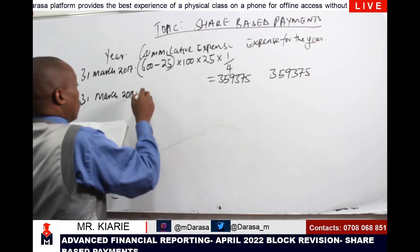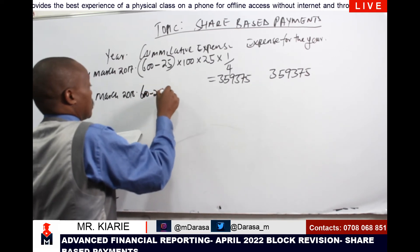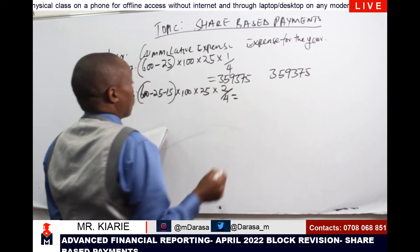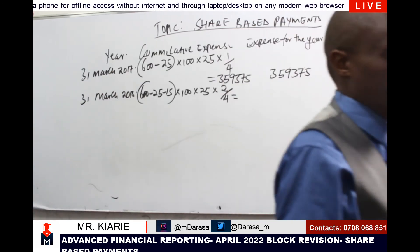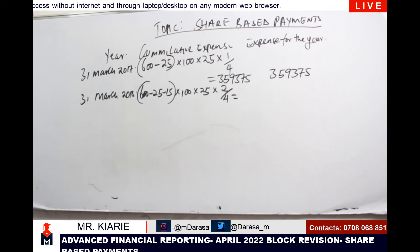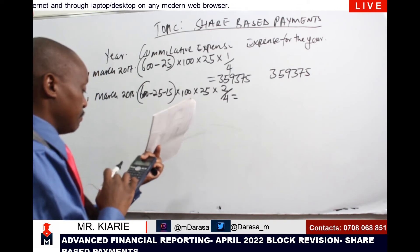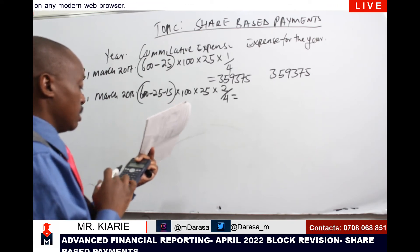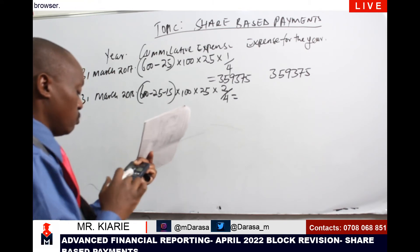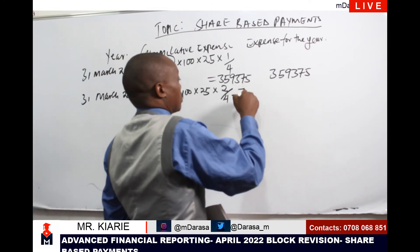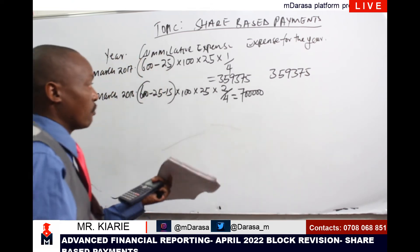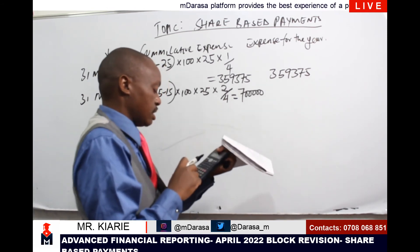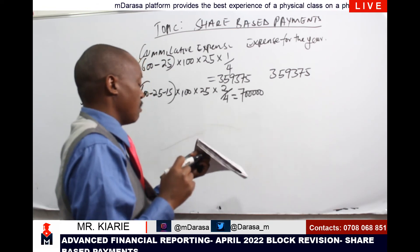For the year ending 31st March 2018, another 15 employees left, so the calculation is: 600 minus 25 minus 15, times 100, times 25, times 2 over 4. This gives a cumulative expense of 700,000. Subtracting the previous year's cumulative expense of 359,375, the expense for the year is 340,625.